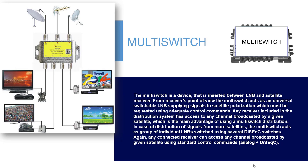The multi-switch is a device inserted between the LNB and satellite receiver. From the receiver's point of view, the multi-switch acts as a universal switchable LNB supplying signals in the satellite polarization requested using adequate control commands. Any receiver in the distribution system has access to any channel broadcasted by a given satellite, which is the main advantage of a multi-switch distribution. In the case of signals from multiple satellites, the multi-switch acts as a group of individual LNBs switched using several DiSEqC switches, allowing any connected receiver to access any channel using standard control commands — analog plus DiSEqC.